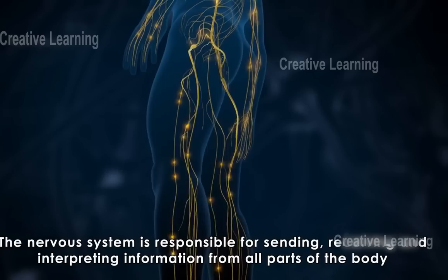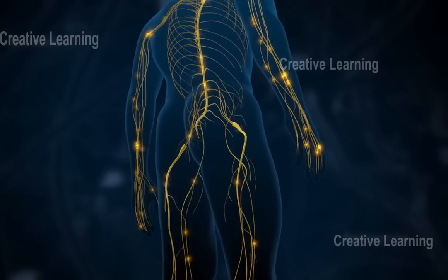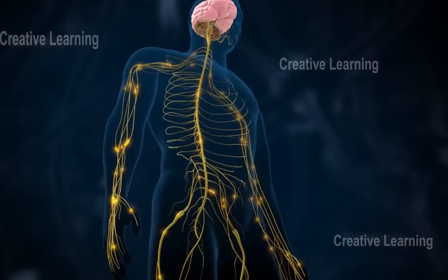The nervous system is responsible for sending, receiving, and interpreting information from all parts of the body. It responds to external stimuli and also monitors and coordinates the functions of internal organs.